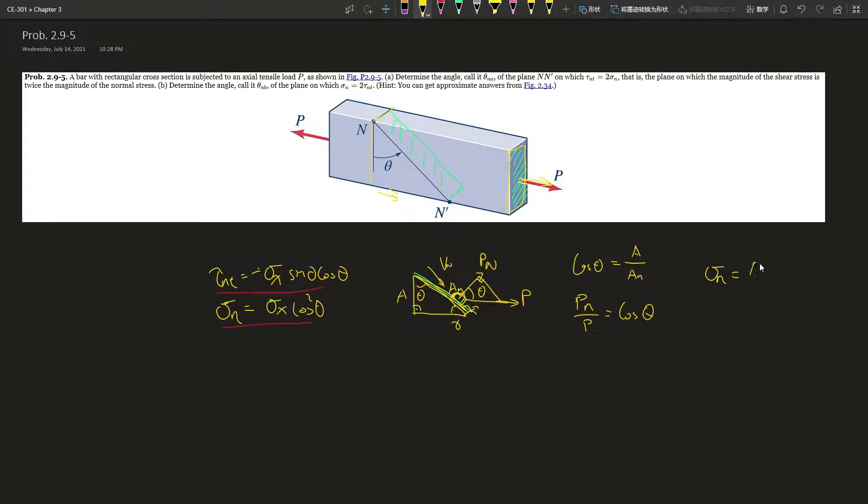Stress equals P over the area, or P_n over A_n. P_n is P times cosine of theta from this equation over here, and then A_n is A divided by cosine of theta. Dividing by a fraction is just times the reciprocal. So we get P over A times cosine squared theta. And P over A is just the axial tensile normal stress in the x direction, which is P over this area over here.